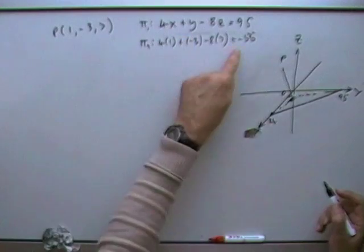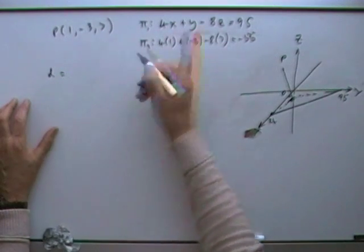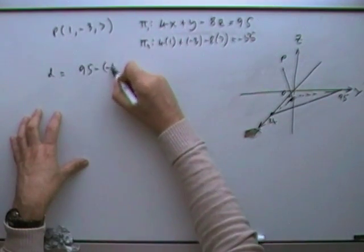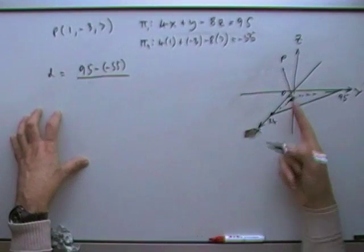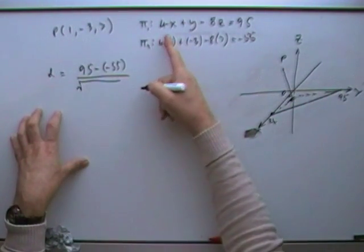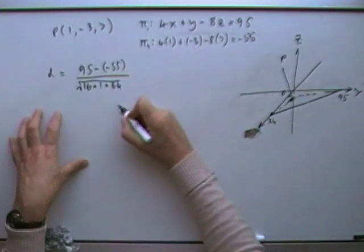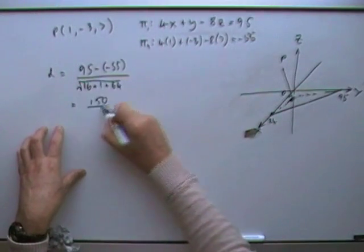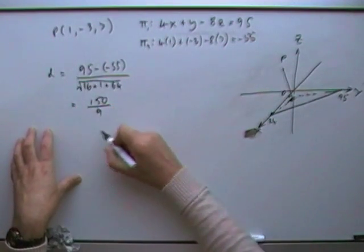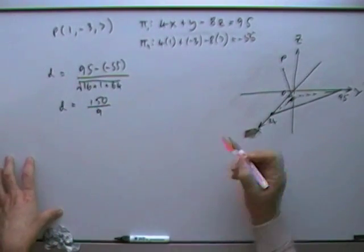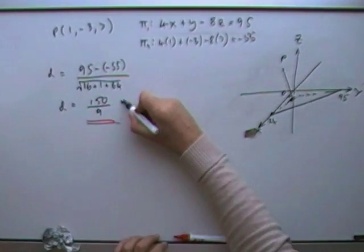So this plane is at the opposite side of the origin from that one. The distance is just the difference in those numbers: 95 take away negative 55, divided by the length of the normal vector. The normal vector is (4, 1, -8), so the length squared is 16 plus 1 plus 64 — that's 81, so the length is root 81, which is 9. The distance is 150 upon 9 units. That's the distance between those two planes, or the distance from the point to the plane.